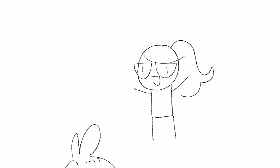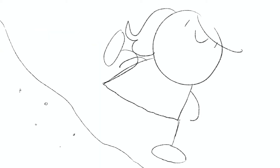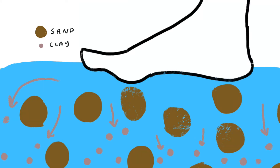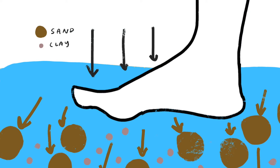Let's see what quicksand looks like when we step on it. When we step on quicksand, we disturb the gel that keeps its shape. Without that gel, the sand collapses and our foot falls in. That's why it is so easy to sink.